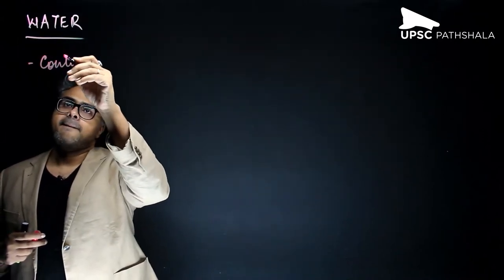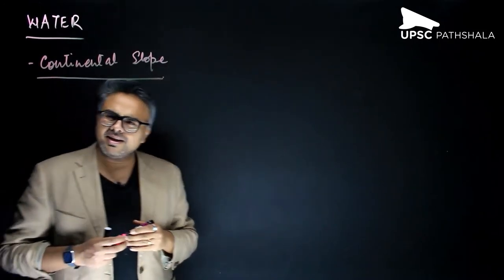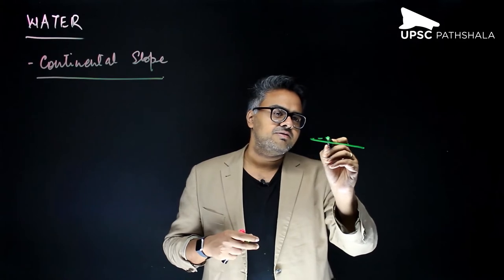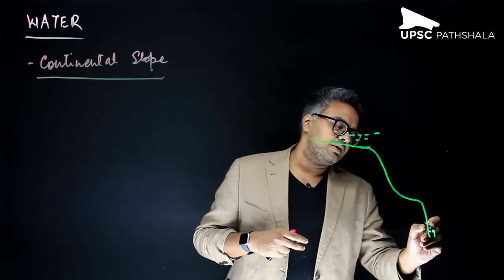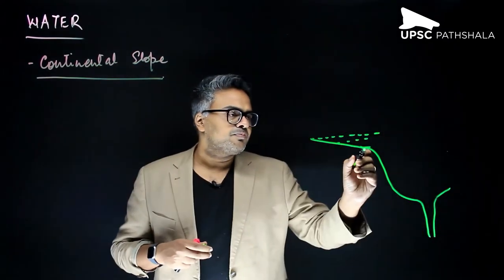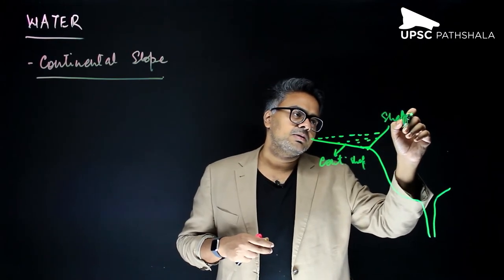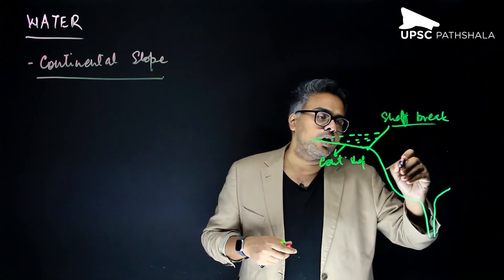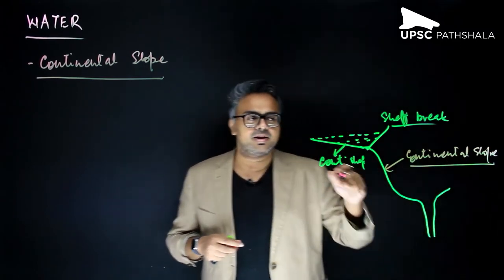The next relief feature is the continental slope. After the shelf break, the area that comes is known as the continental slope. The indicator of the beginning of the continental slope is an abrupt change in the slope — an abrupt increase in the gradient. If the change is gentle, it is still continental shelf; it has to be abrupt.